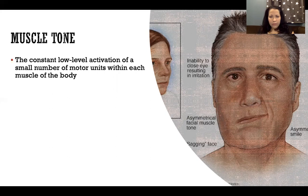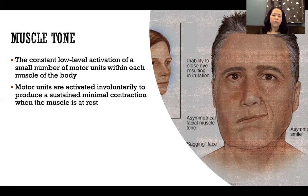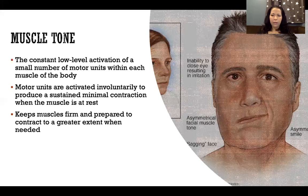If a muscle doesn't have tone, that is some kind of paralysis or flaccidity, which is never a good thing. Motor units are activated involuntarily to produce a sustained minimal contraction when the muscle is at rest. Even if we lie down and fully rest, we still have muscle tone in all muscles throughout the body. This keeps the muscles firm and prepared to contract to a greater extent when needed — idling and ready to respond the moment a motor command comes from the nervous system.